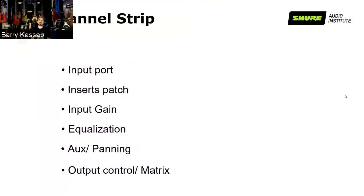So what are these knobs, buttons, and faders for? If we slice the mixer in a vertical shape, each vertical section is called a channel strip. If we strip it out literally, it becomes a channel strip. The multiplication of those are channels. So if you have a mixing desk with 32 channels, you will have 32 channel strips.